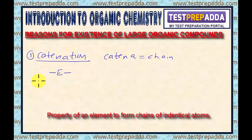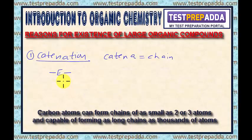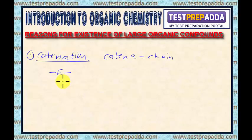We all know that the covalency of carbon is four — carbon is tetravalent. Carbon atoms can form chains as small as two or three atoms, and carbon atoms can form chains as long as thousands of atoms. Please note that these chains can also form rings of different sizes.